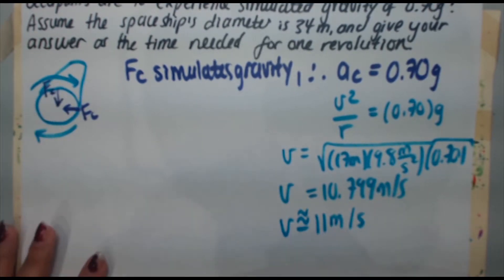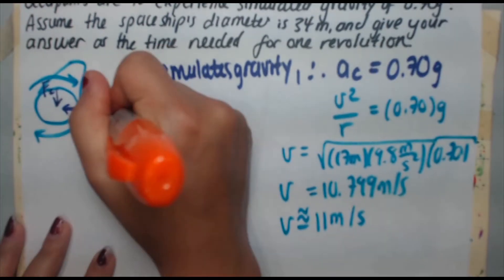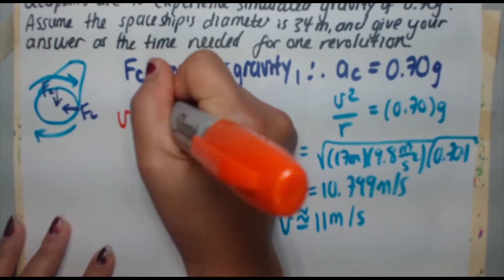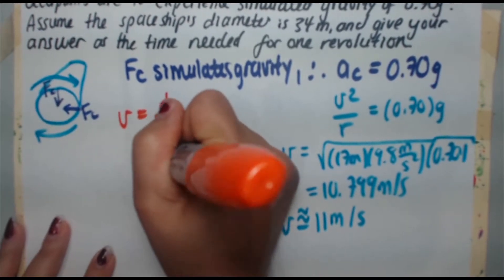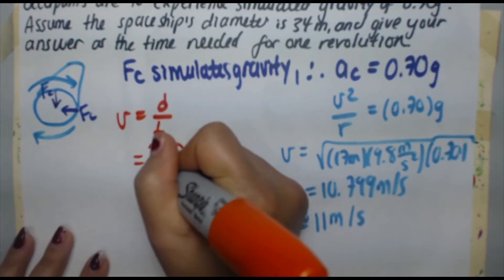Using our handy old speed equals distance over time equation, the distance you travel in a circle is 2πr and the time to go in a circle is called the period capital T, so v is equal to 2πr over T.